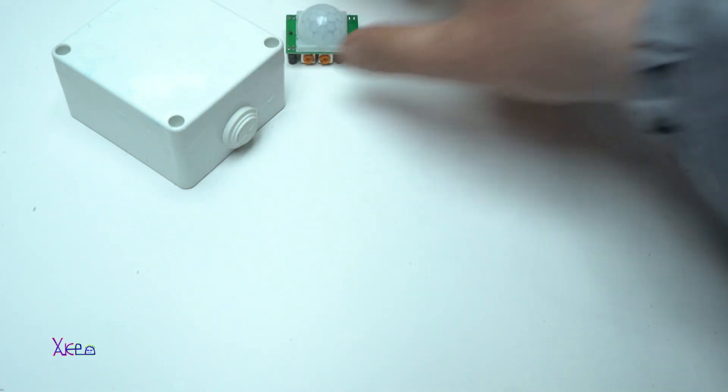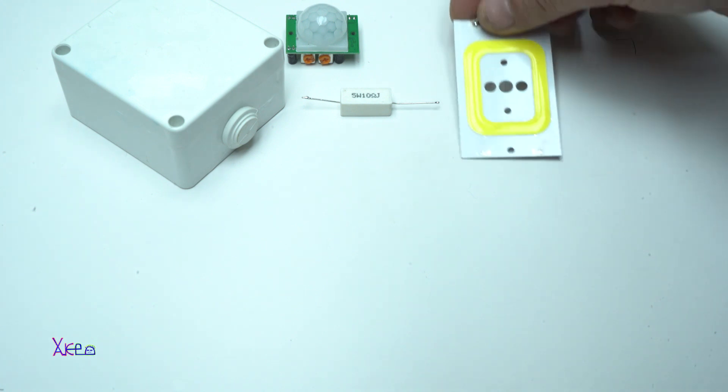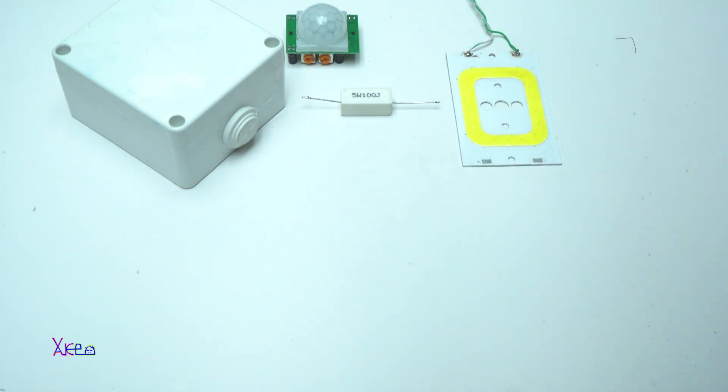First, the box. The PIR sensor. The resistor for the LED. Big power LED, five watts. And a connector.